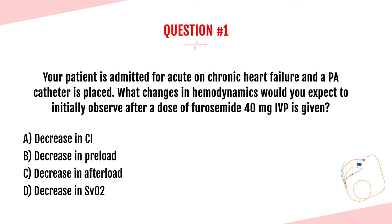Question number one. Your patient is admitted for acute on chronic heart failure and a PA catheter is placed. What changes in hemodynamics would you expect to initially observe after a dose of furosemide 40 milligrams IV push is given? A: decrease in CI or cardiac index, B: decrease in preload, C: decrease in afterload, or D: decrease in SVO2?